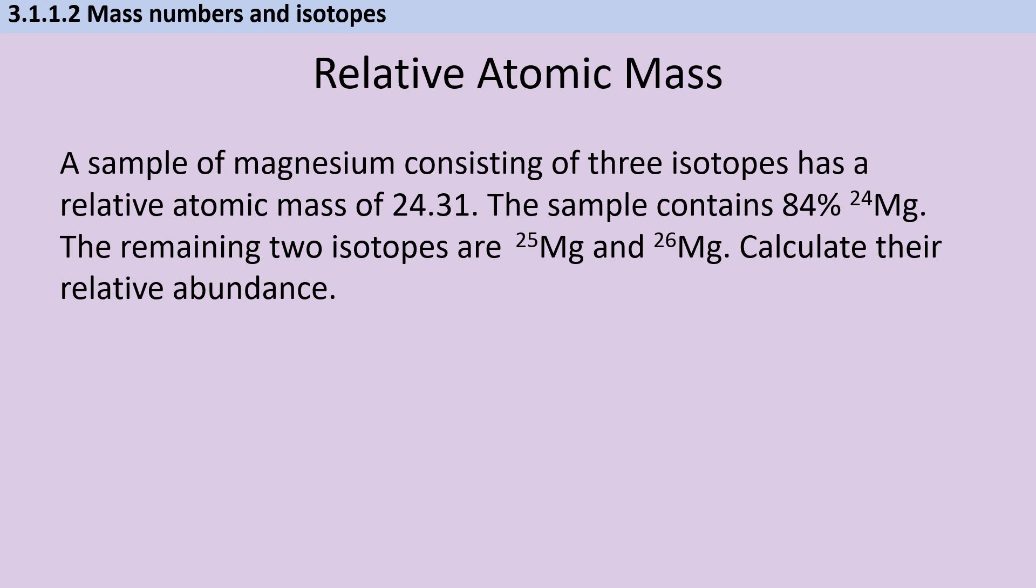Of course, not every question is only going to involve two isotopes. In this question, we have a sample of magnesium with three isotopes with a relative atomic mass of 24.31. Like I said earlier, you are always going to be asked to give your relative atomic masses to one decimal place, but in the question, you may be given one to multiple decimal places. This sample contains 84% magnesium-24, and you need to figure out the remaining abundances of the isotopes with masses of 25 and 26. This looks a bit scary, but they've actually given us all the information that we need. So what we can do is remove magnesium-24 from the equation and then just carry on as if we just had two isotopes.